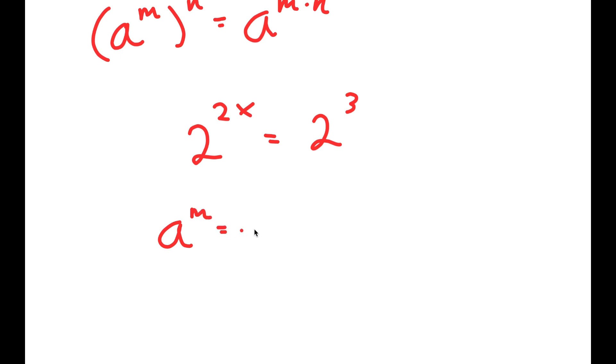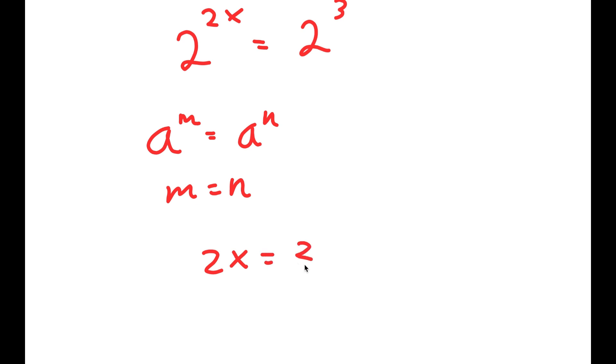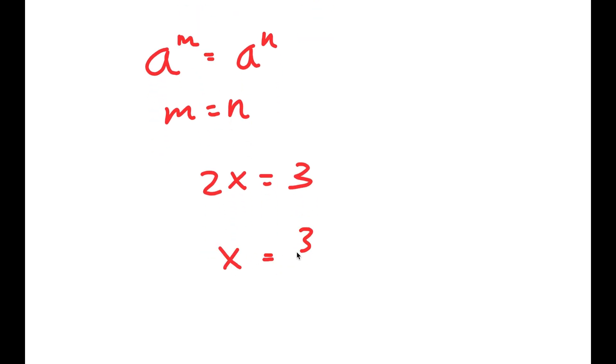And now if I have something in the form a to the power of m is equal to a to the power of n, this means that m is equal to n. So 2x is equal to 3, and x is equal to 3 over 2.